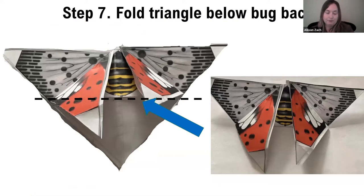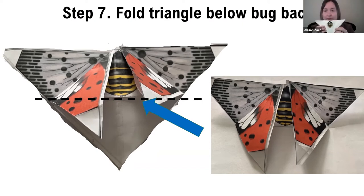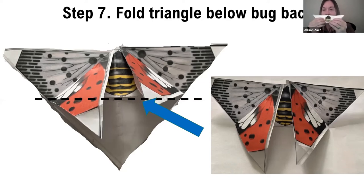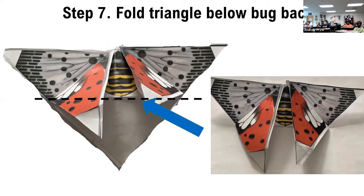Now unfold what we just folded — open it back up to just the triangle. Then, looking closely, right underneath the bottom of the yellow bug there's a line with a dotted line marker. Fold that back towards the back, making the bottom flat so the bottom is just your bug. You're folding this bottom triangle up so it should look flat at the bottom.